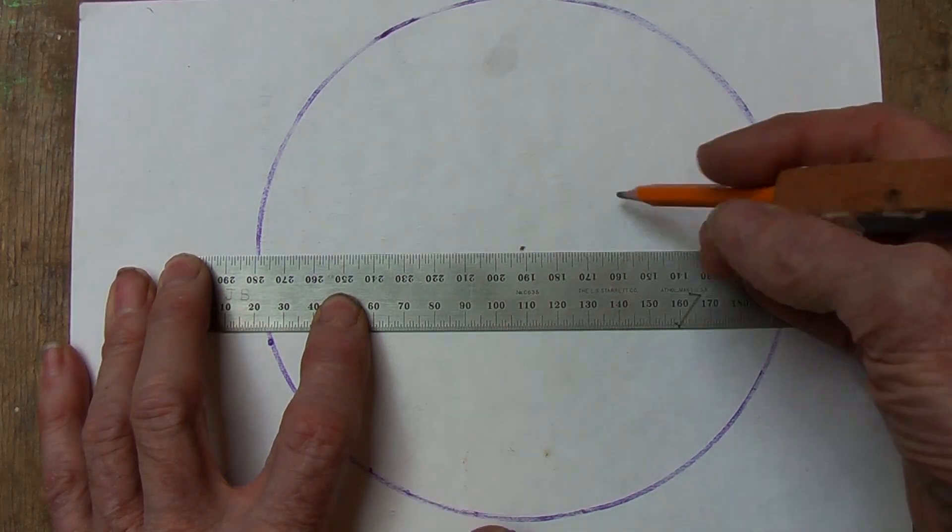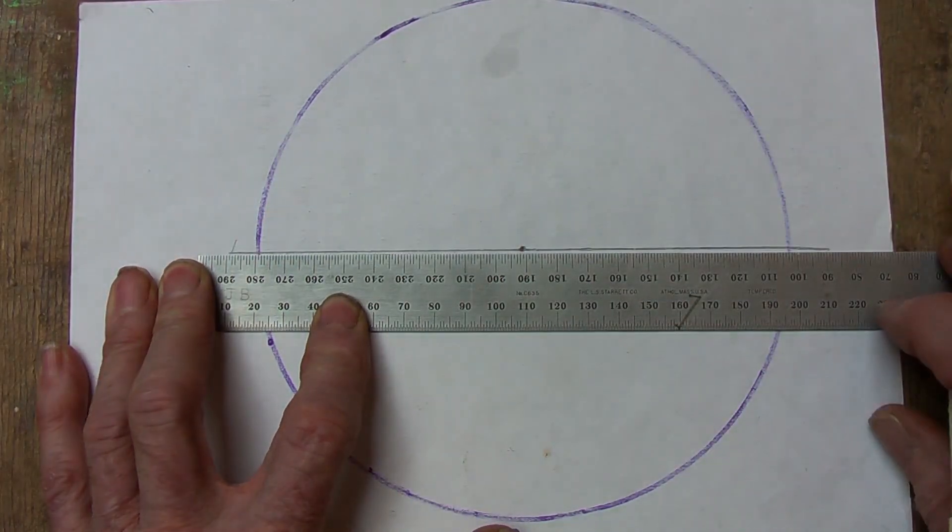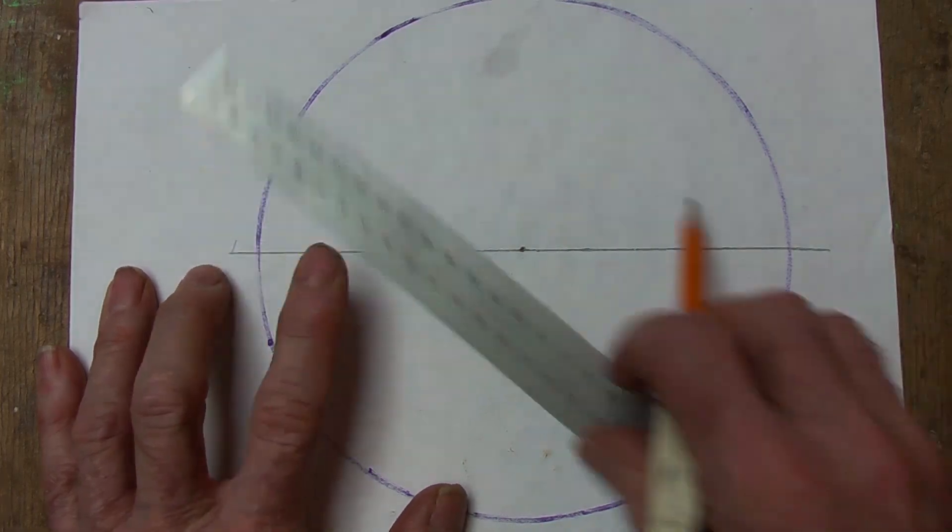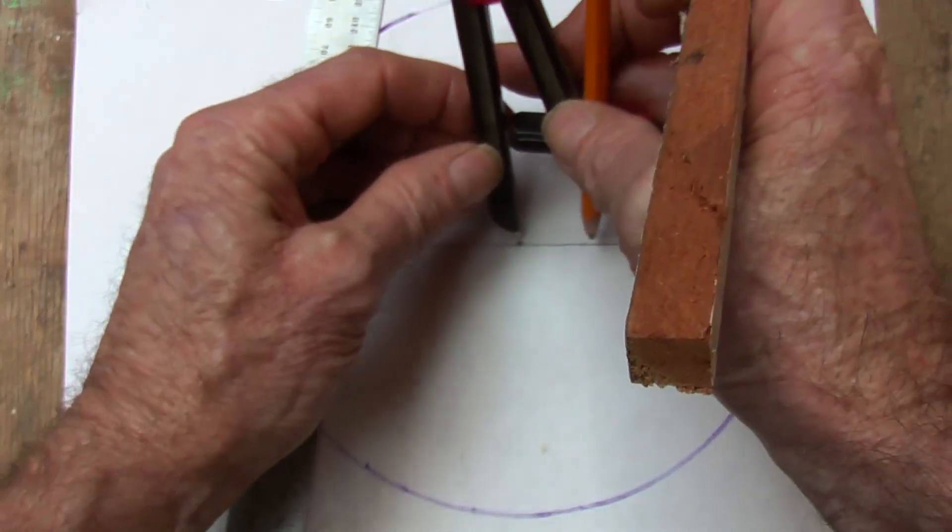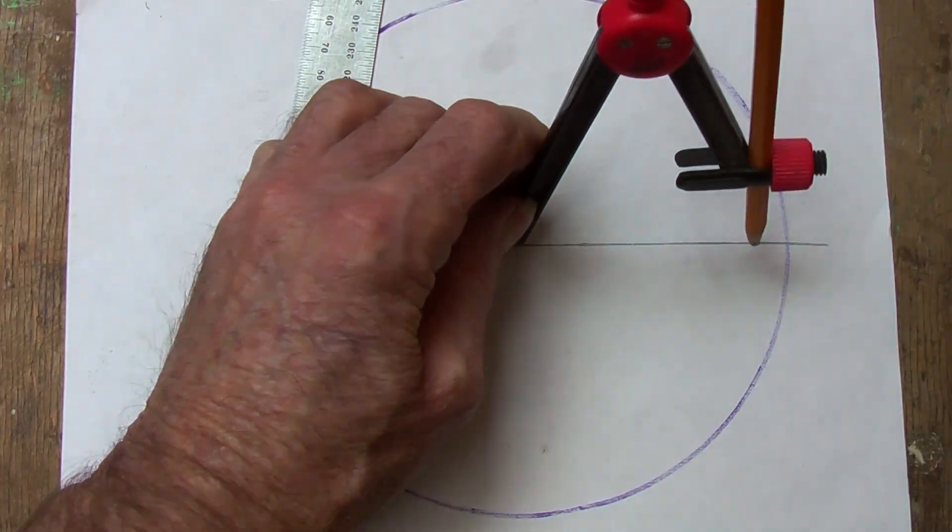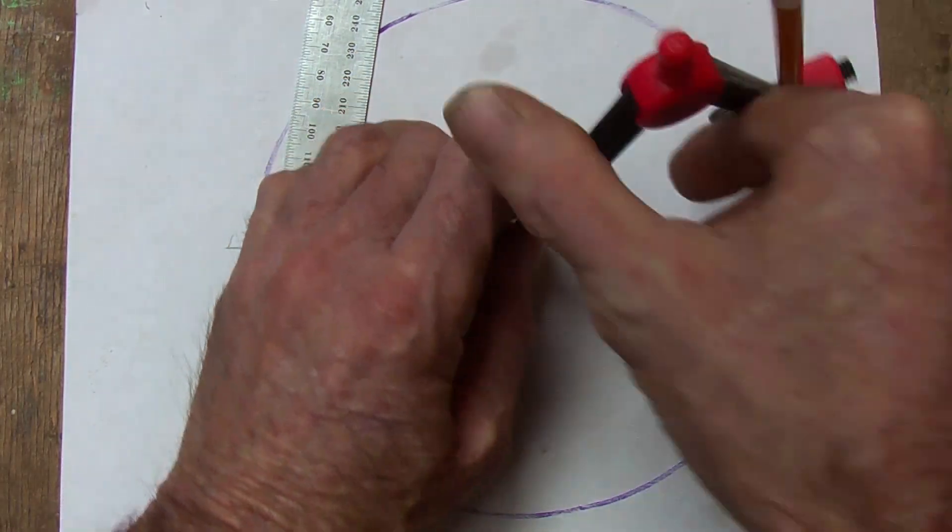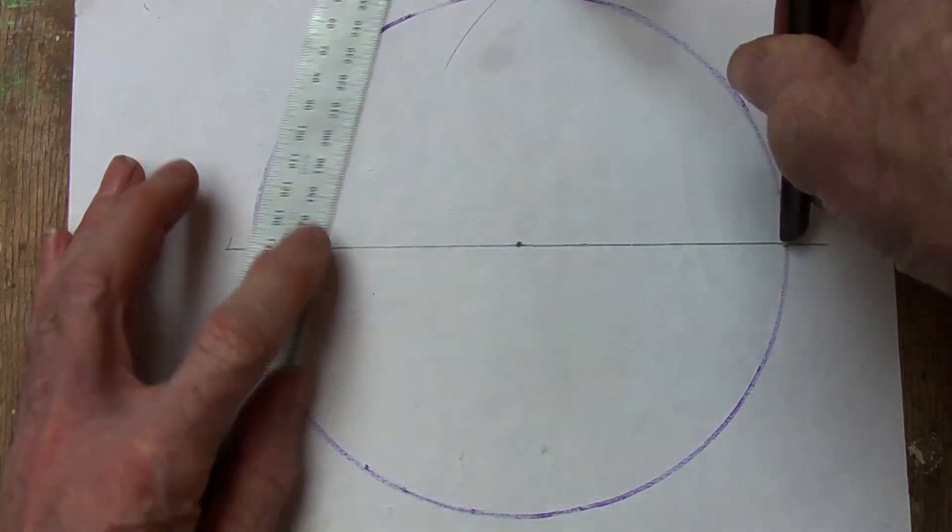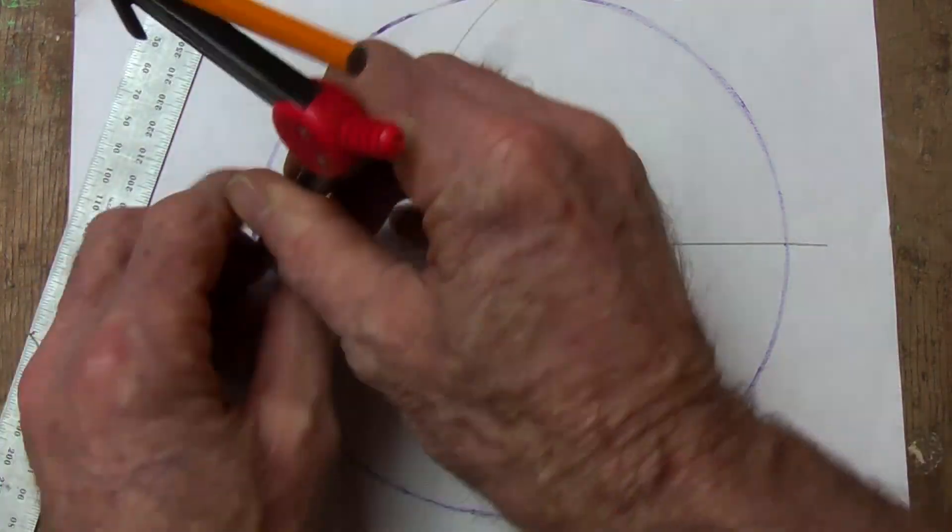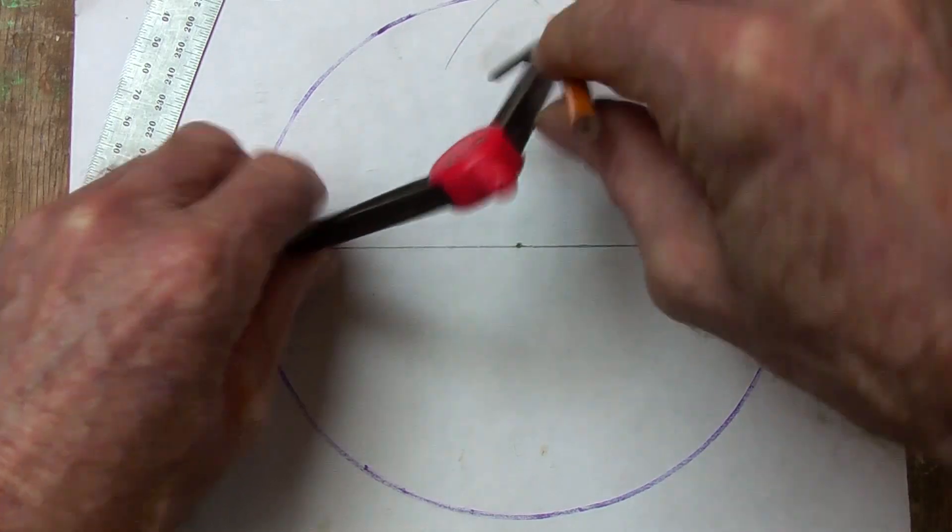The easiest division that you can do with your circle is in half, and then once again you can basically divide that with a compass into quarters.